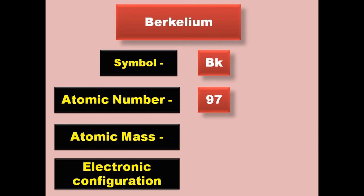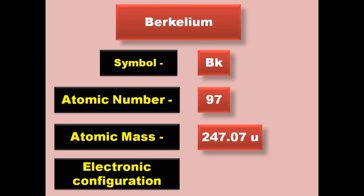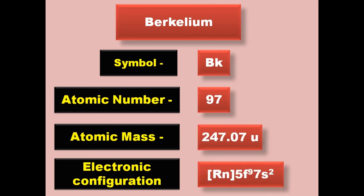Berkelium has symbol Bk, atomic number 97, atomic mass 247.07, electronic configuration [Rn] 5f9 7s2. Berkelium is an actinide and exists in solid form at room temperature.